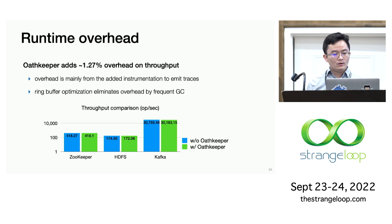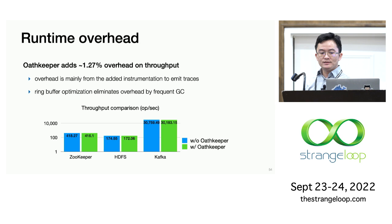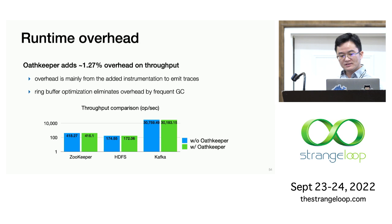We also measured the overhead OathKeeper introduces to the system at runtime. The main source of overhead comes from the added instrumentation to emit the traces at runtime. The average system throughput overhead is around 1.27%. This low overhead is enabled by some optimizations we introduced, such as ring buffer optimization.